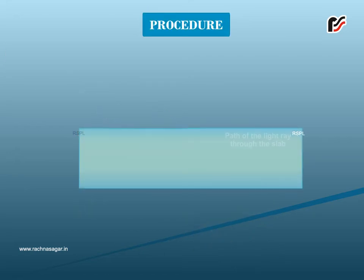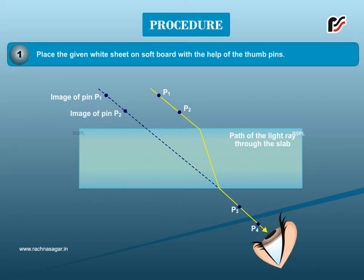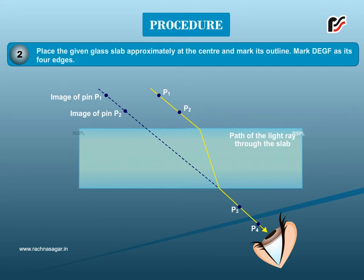Procedure: Place the given white sheet on softboard with the help of thumb pins. Place the glass slab approximately at the center and mark its outline. Mark DEGF as its four edges. Draw a line OA depicting the incident ray on the face DE of the slab at approximately 40 degree inclination.